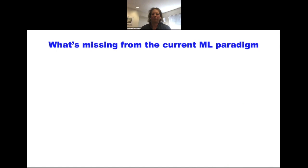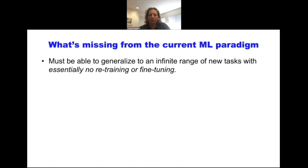What's missing? Here are two big things. Most of the dominant work these days — certainly a lot of the work in the computer vision community — represents a strongly machine learning-based approach to trying to build common sense, and we have to recognize its major limitations. Common sense requires being able to generalize to an infinite range of new tasks with essentially no retraining or fine-tuning. There's progress on meta-learning and training on some tasks then fine-tuning quickly to others, but in a sense, to human common sense, there almost is no task — and to the extent there are tasks, they're tasks we make up for ourselves.